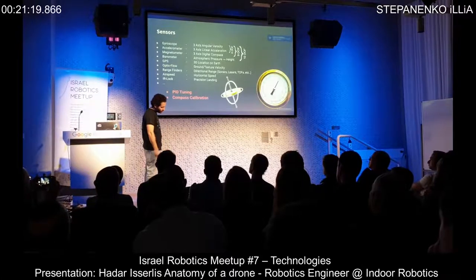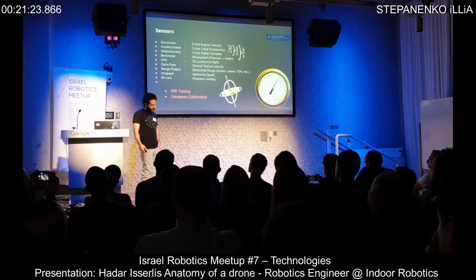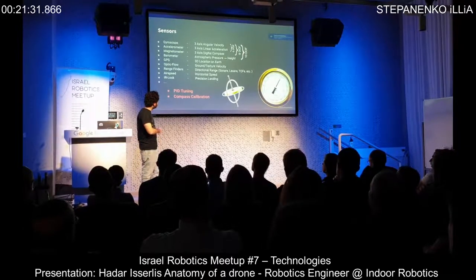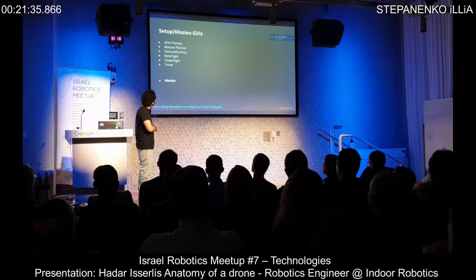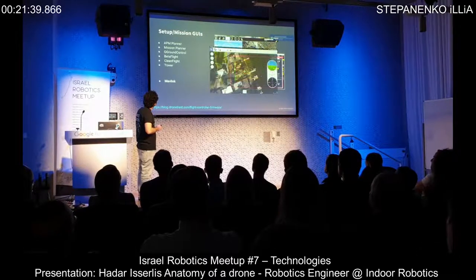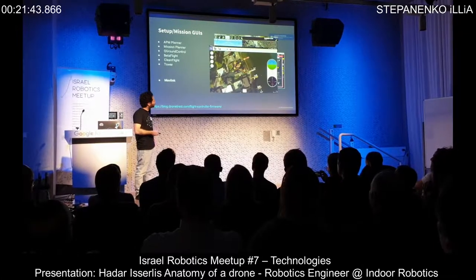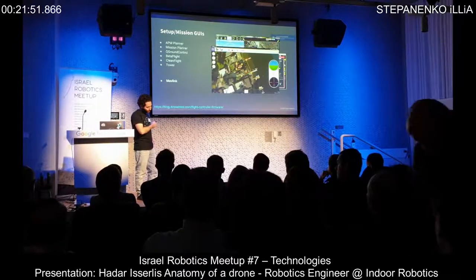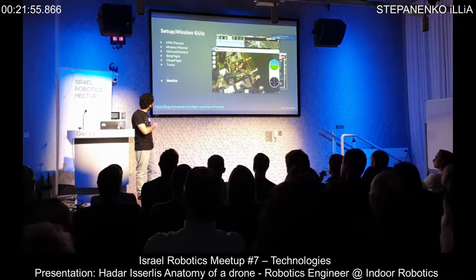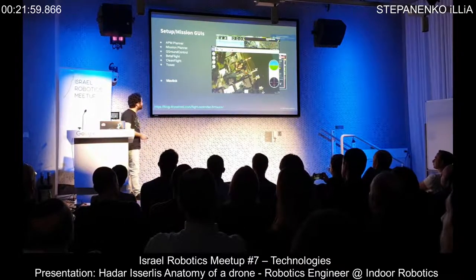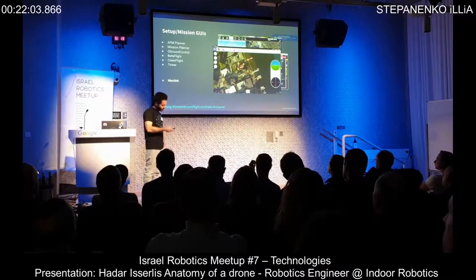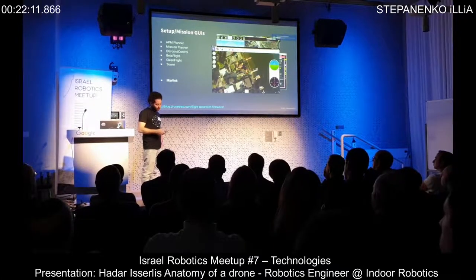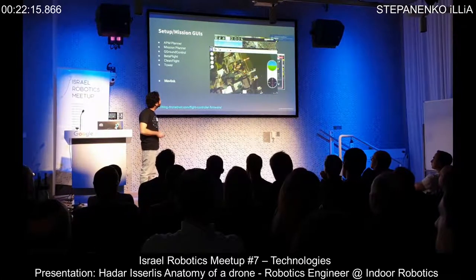PID stands for Proportional, Integral, and Derivative — it's a basic closed-loop controller from control theory; look it up on Google. We have many GUIs to connect to our flight controllers and set them up, which is quite easy. The most important thing moving toward autonomous flight is MAVLink — a protocol used between the drone and the ground control station, whether that's a mobile app like Tower or a laptop.